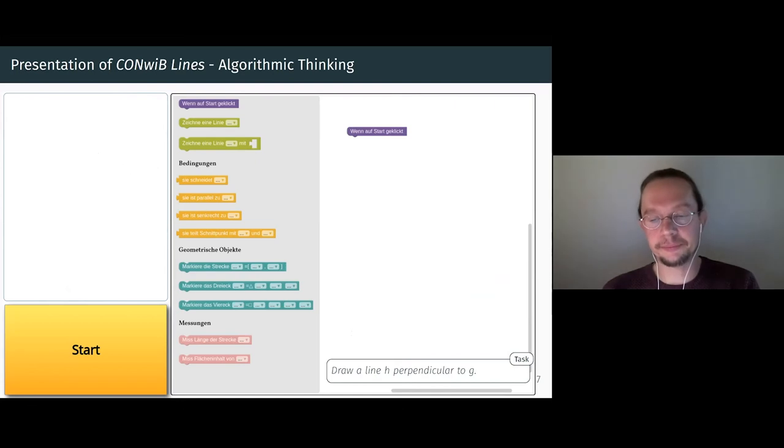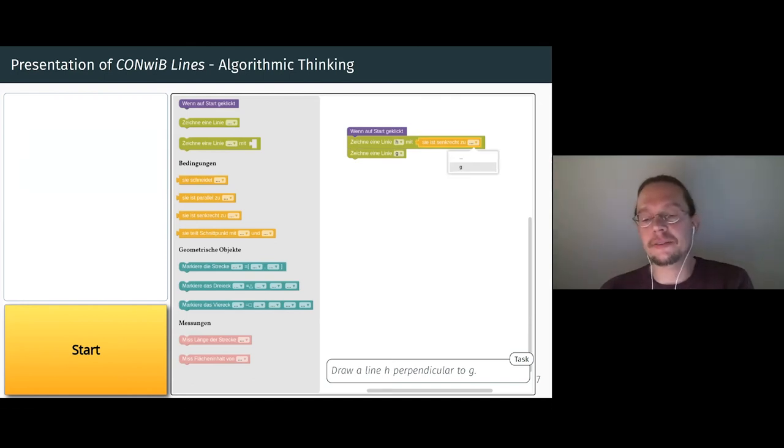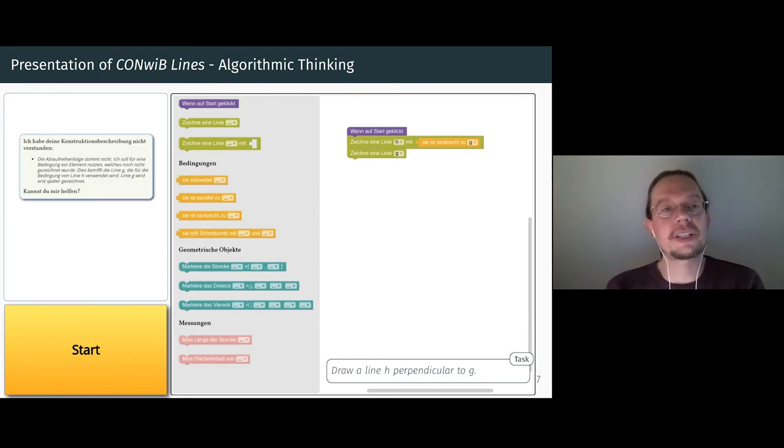This can now be a starting point for further considerations related to the symmetry properties of the parallelogram drawn here. About algorithmic thinking. The second task is intended to show how the application deals with the wrong order in sequence. We start by drawing a conditional line H. But since there is no other line already drawn, the selection menu is empty. We click on the start button. The idea is now to draw a line G. This line now appears in the drop down menu of the condition. A click on the start button leads to the feedback that the construction description is still wrong. A condition is defined with a line that will be drawn later, so here the line G, which is defined after the line H. In this context, the user learns that instructions have to be put into a certain order.